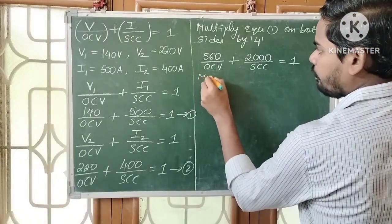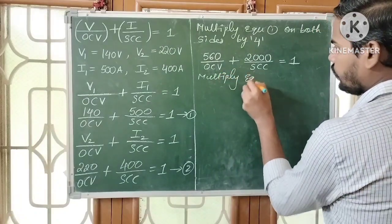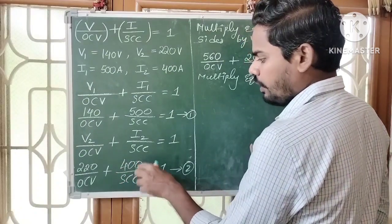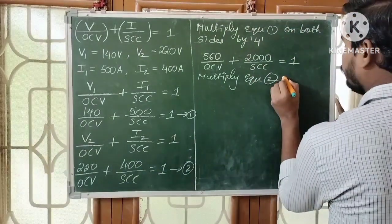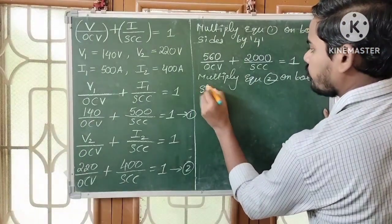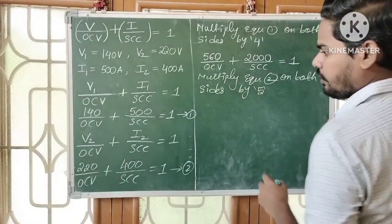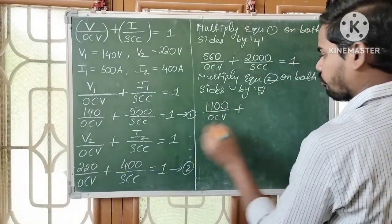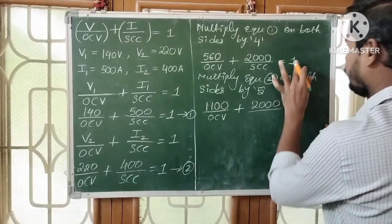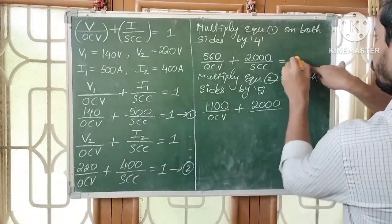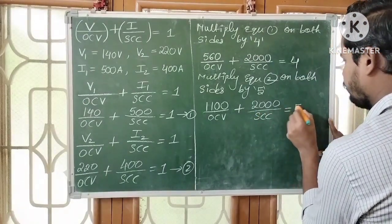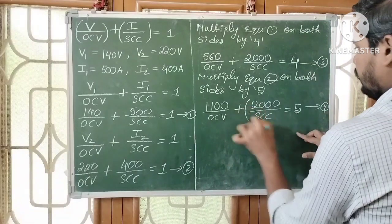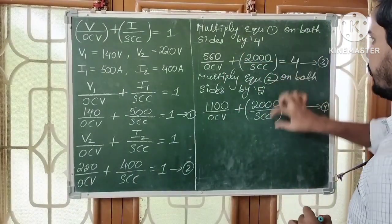Similarly, multiply equation 2 on both sides by 5: (5×220)/OCV + 2000/SCC = 5, giving 1100/OCV + 2000/SCC = 5 — equation 4. In equations 3 and 4, the second terms (2000/SCC) are the same, so subtracting eliminates them.